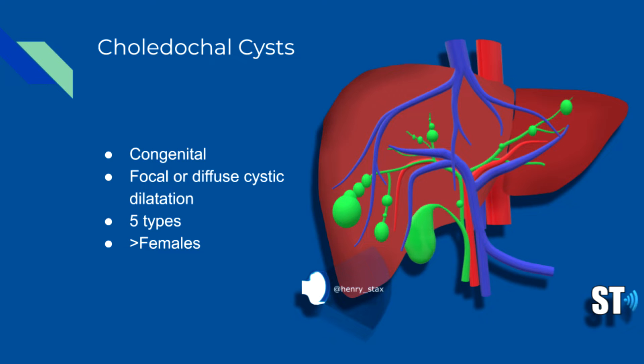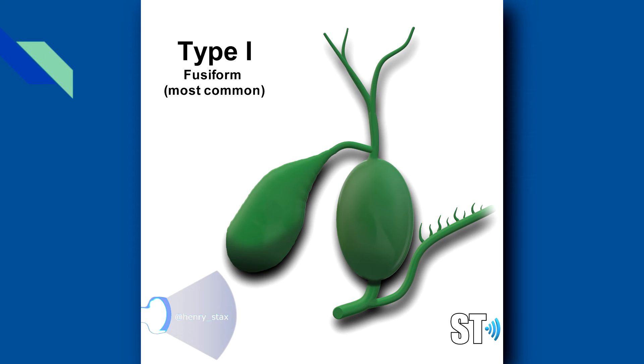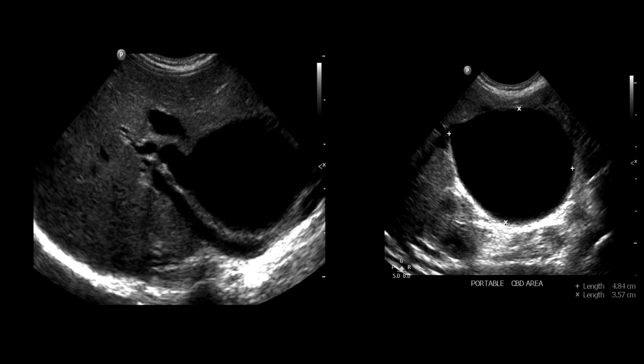The disease is classified into five types. Type 1 is a fusiform dilatation of the common bile duct, and it is the most common form.